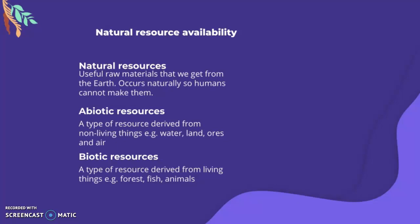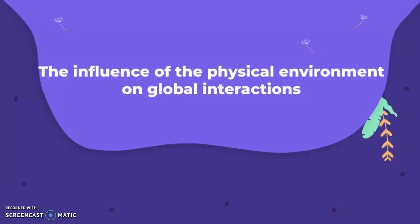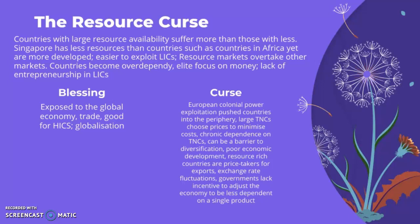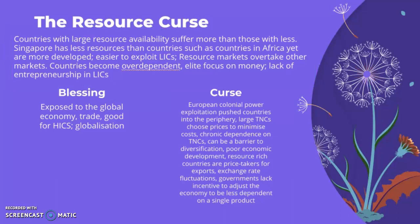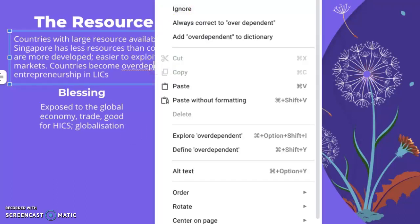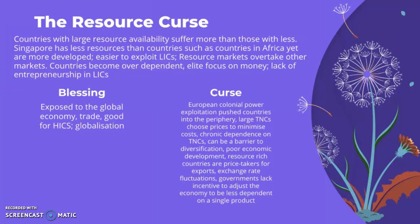Resources impact global interaction through the idea of the resource curse. Countries with large resource availability can suffer more than those with less — Singapore has fewer resources than countries in Africa yet is more developed. It is easier to exploit low-income countries. Resource markets overtake other markets, countries become over-dependent, elites focus on money leading to corruption, and there's a lack of entrepreneurship to manage rich resources efficiently.